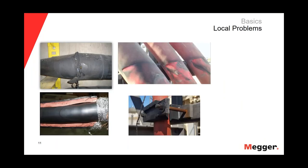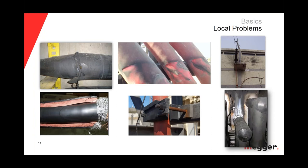In terms of local problems, some pictures in this slide show some of the classic problems related to workmanship issues or manufacturing defects. Starting from the upper left corner, we have a transmission splice that blew up because it was assembled incorrectly. Below, we have a medium voltage heat-shrink splice where the material was not heated uniformly, the shrink material was not completely contracted, and that void created problems with partial discharge.